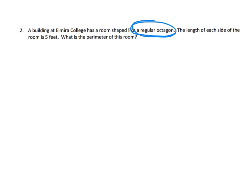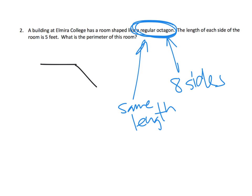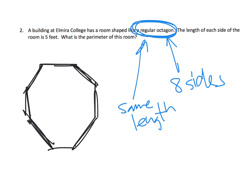Now here — a building at Elmira College has a room shaped like a regular octagon. So we know it has eight sides and they're all the same length. Those two words, 'regular' and 'octagon,' mean it's eight sides and all of those sides are the same length. The length of each side is five feet. What is the perimeter?